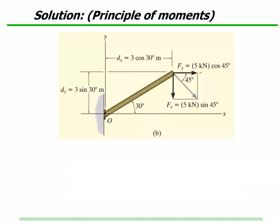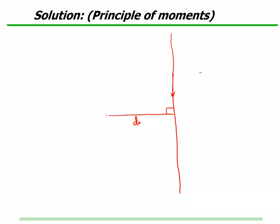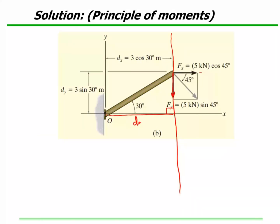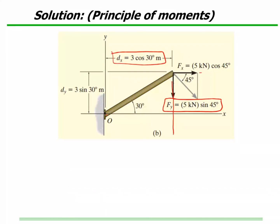The other force vector is this one acting downward. I draw a force line — the action line — and then look at its perpendicular distance from it. This distance dx is given here. So I've got this force component acting downward and this perpendicular distance given here. With respect to O, there's a tendency to rotate in the clockwise direction, so this would again be negative.